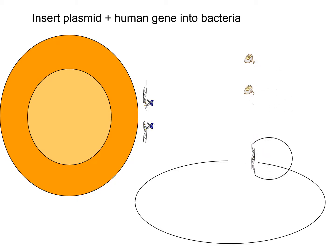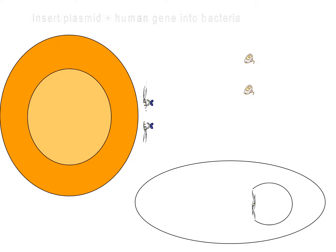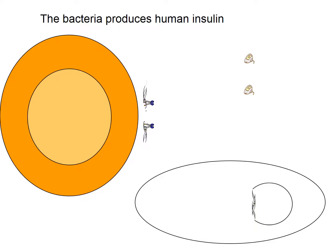You'd have a lot of bacteria and a lot of plasmids, and it has about a 1% success rate — but 1% of billions of bacteria is quite a lot. Once the bacteria has the plasmid and the human insulin gene, as the bacteria divides and copies its own DNA, it's going to copy the human DNA and at the same time make the protein from that human gene — in this case, insulin.